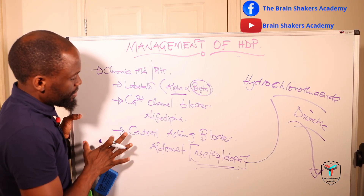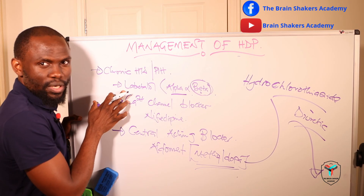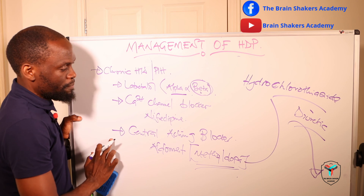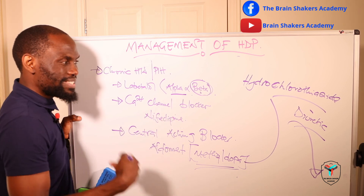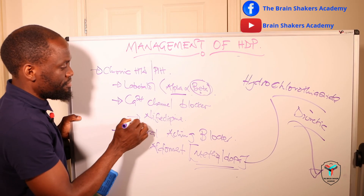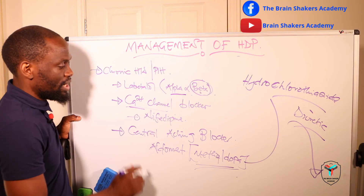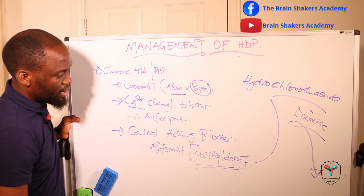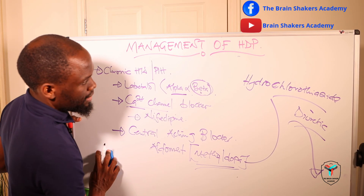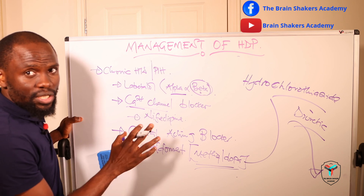There are cases where you may want to use two drugs — for instance, labetalol together with nifedipine. However, you must be cautious when combining drugs with the same mechanism, such as magnesium sulfate and nifedipine, because they both affect dihydropyridine receptors and have the potential to cause calcium channel blocking. You don't want to consistently cause that hypocalcaemic state in the system.